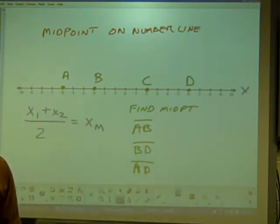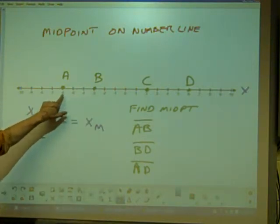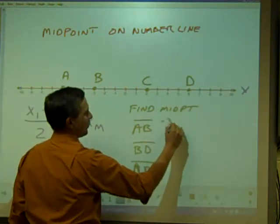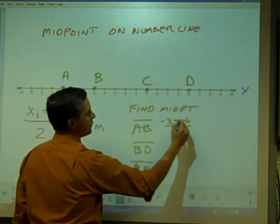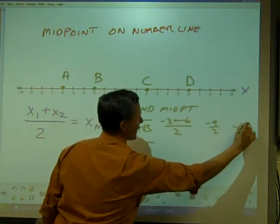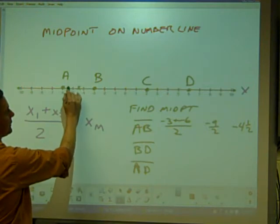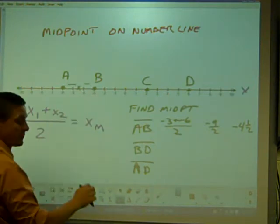Here's a little number line of four points, and I'm going to ask you to find the midpoint in three different segments. A, B: negative three plus negative six, those are the endpoints, divide by two. Negative nine over two - negative nine halves, which is negative four and a half. A and B, it's right there. You can see the distance - same distance in between.